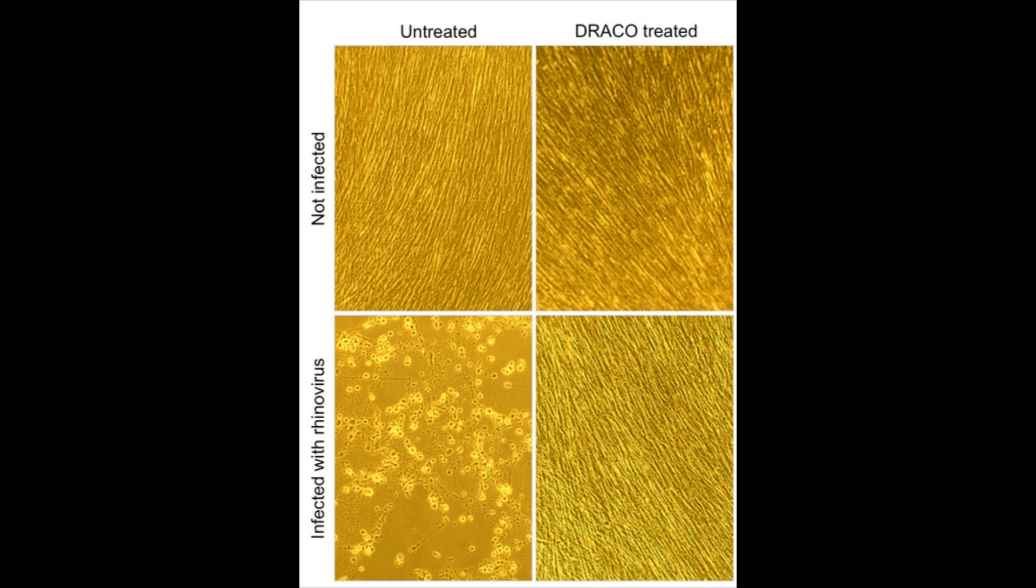On the bottom are human cells infected with the rhinovirus. On the left, the untreated cells have been demolished, while on the right, DRACO has eliminated the infection, leaving healthy tissue behind.